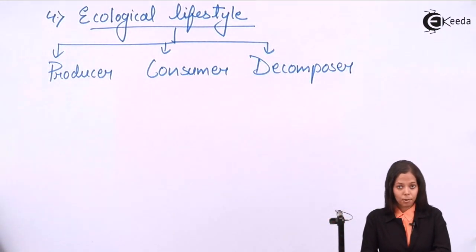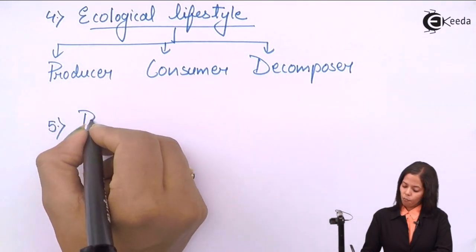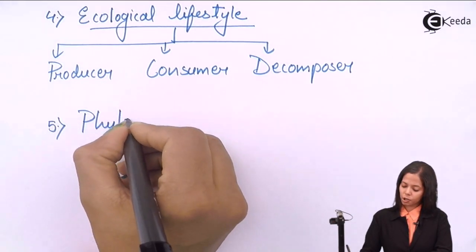Plants are producers. Bacteria and some fungi are decomposers, and rest all are consumers in our ecosystem. The last criteria is phylogenetic relationship.